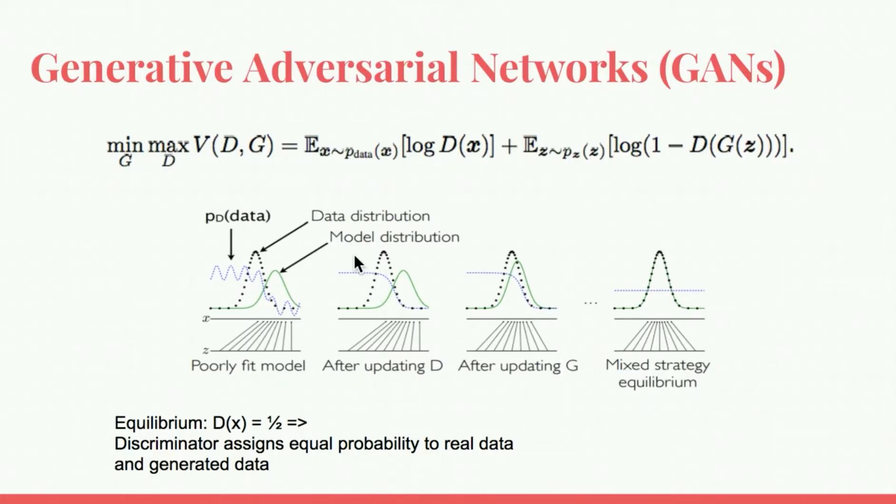Generative adversarial networks, otherwise known as GANs, involve the use of two neural networks: a generator and a discriminator. A good intuitive analogy is that the generator is playing the role of a criminal creating counterfeit money, and the discriminator is the cop or justice system attempting to determine whether the money is real or counterfeit.